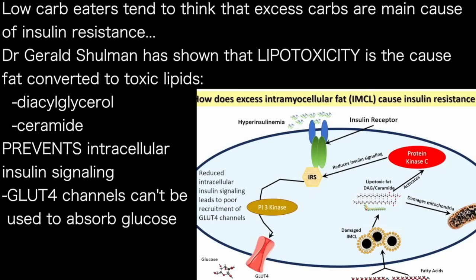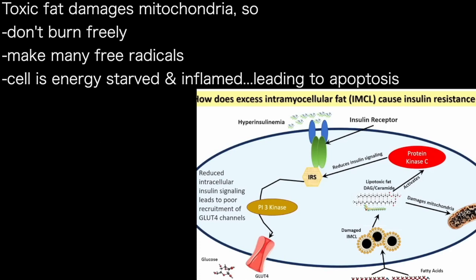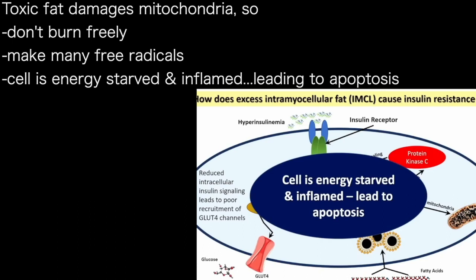With lipotoxicity, you convert the fat inside the cells to ceramides and diacylglycerol, and this prevents intracellular insulin signaling so that you cannot recruit the GLUT4 channels through which you take in glucose. In addition, the toxic fat damages your mitochondria. The mitochondria don't burn cleanly — they make a lot of free radicals. The cell gets energy-starved, inflamed, and dies.